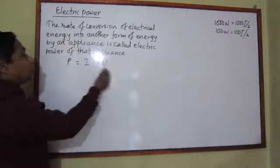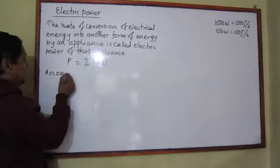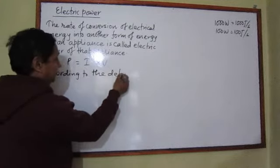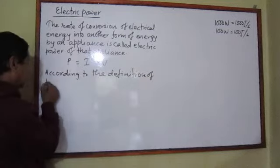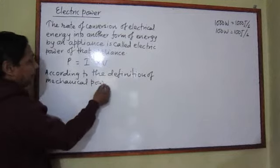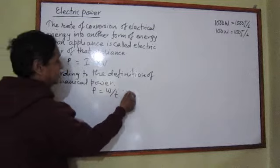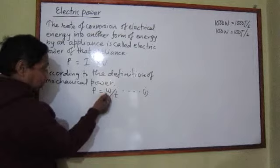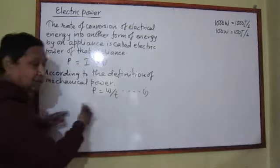But how did it come? I am going to prove this. According to the definition of mechanical power, we know that power equals work done divided by time. This can be recognized as the first equation. Now I want to replace this work done — mechanical work done — by work done in an electric circuit, and it can be done this way.